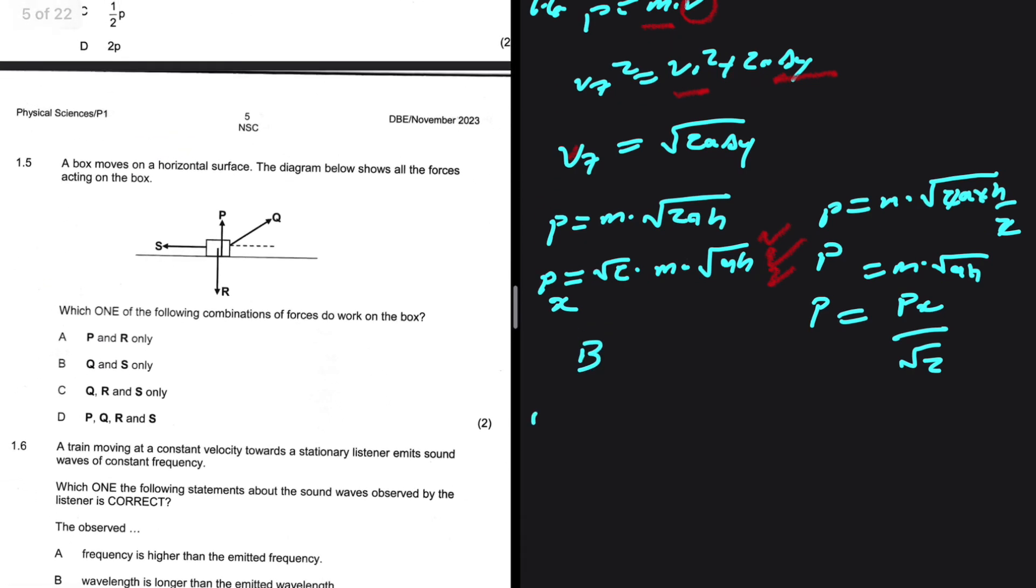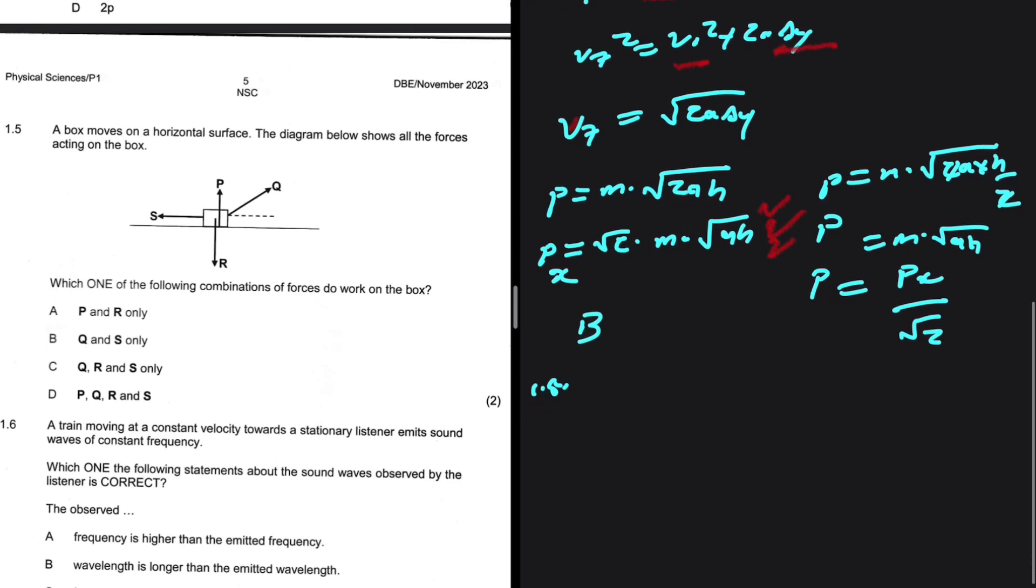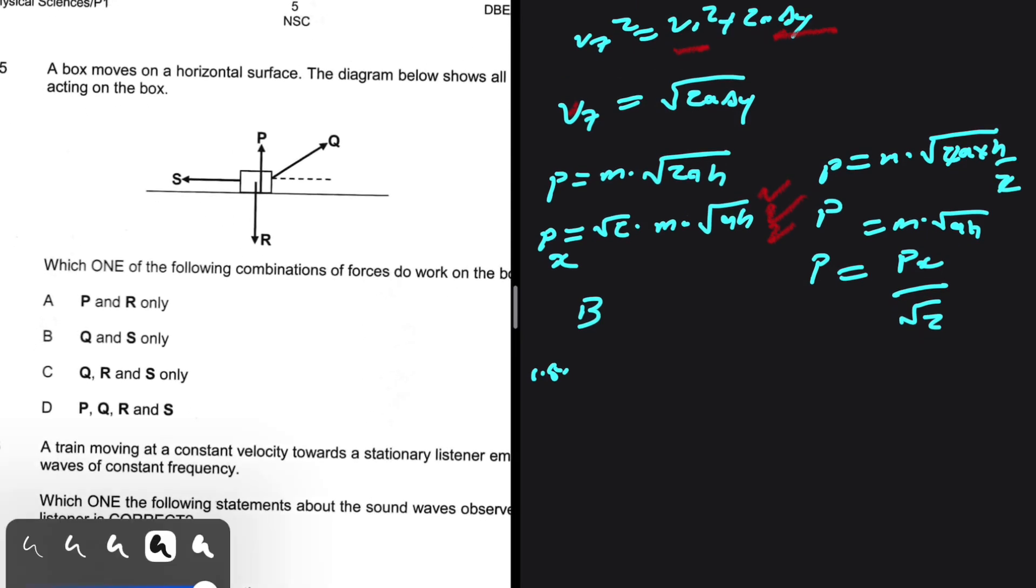1.5: A box moves on a horizontal surface. The diagram below shows all the forces acting on the box. Which of the following combinations of forces do work on the box? Obviously P is not doing any work because the object is moving horizontally. The angle between P and the movement of the box is going to be 90 degrees. If it is 90 degrees, cos of 90 is 0, so it's not doing any work. Same is true with R. The angle is going to be 90 or 270 depending on whether you move clockwise or anti, but the work done by P and R is 0. So the only forces that are doing work is S and Q. Which option is S and Q? That is B. So the answer to 1.5 is B.